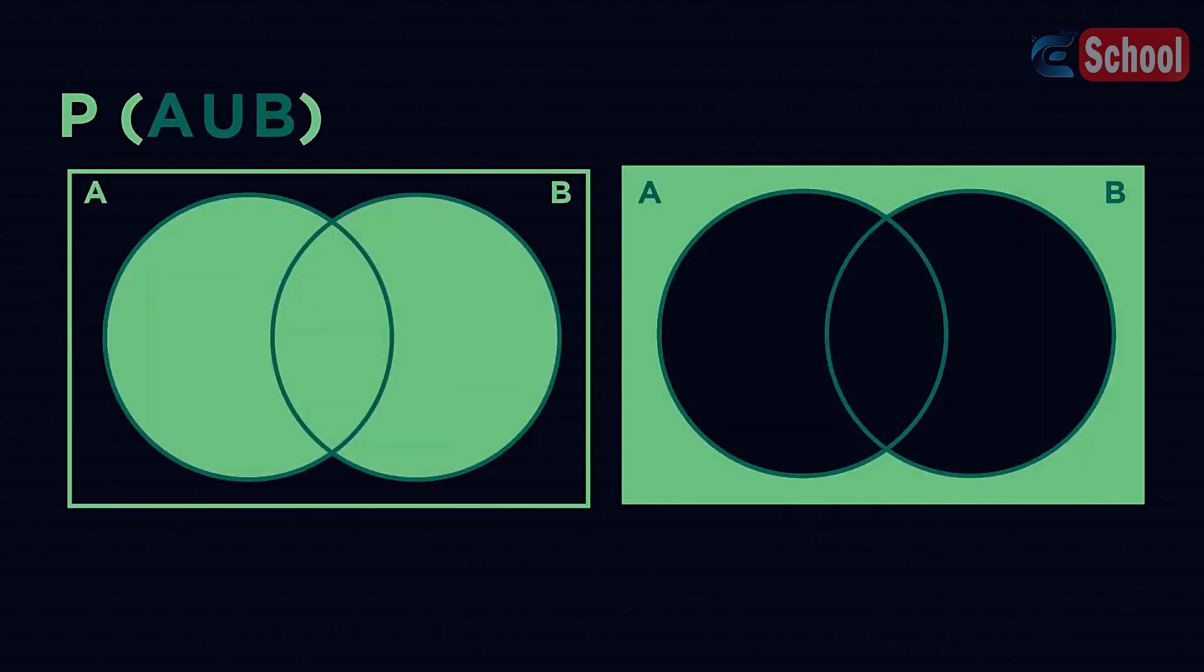This is the Venn diagram for P(A) union B. Its inverse is given by notation P(A') intersection B'. Remember to find the opposite notation and change each symbol for its opposite.